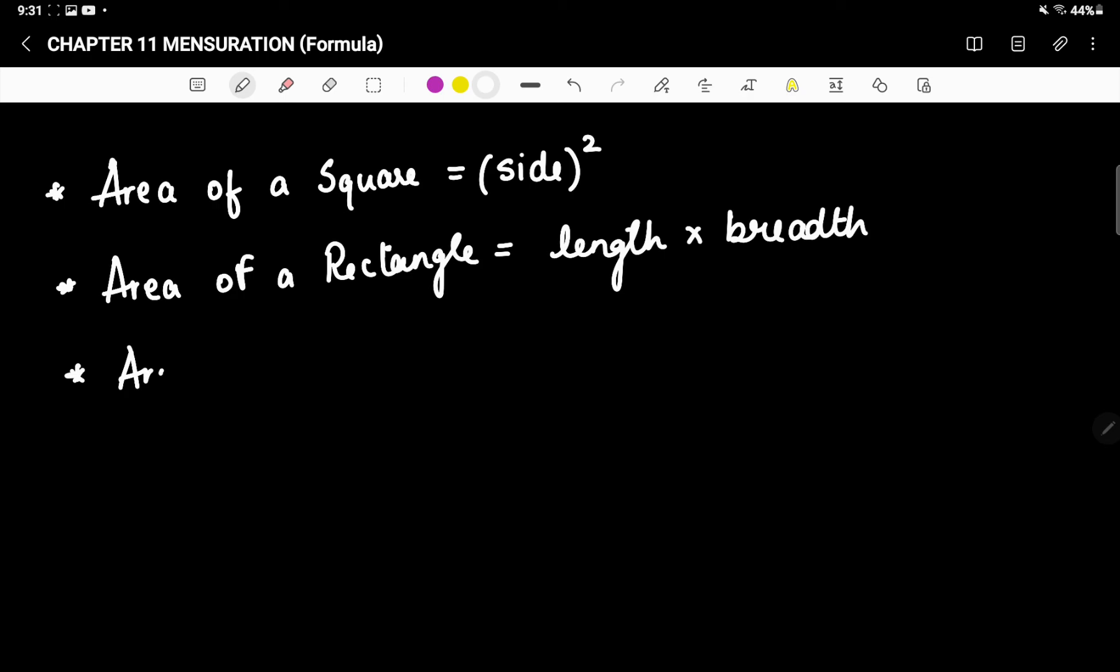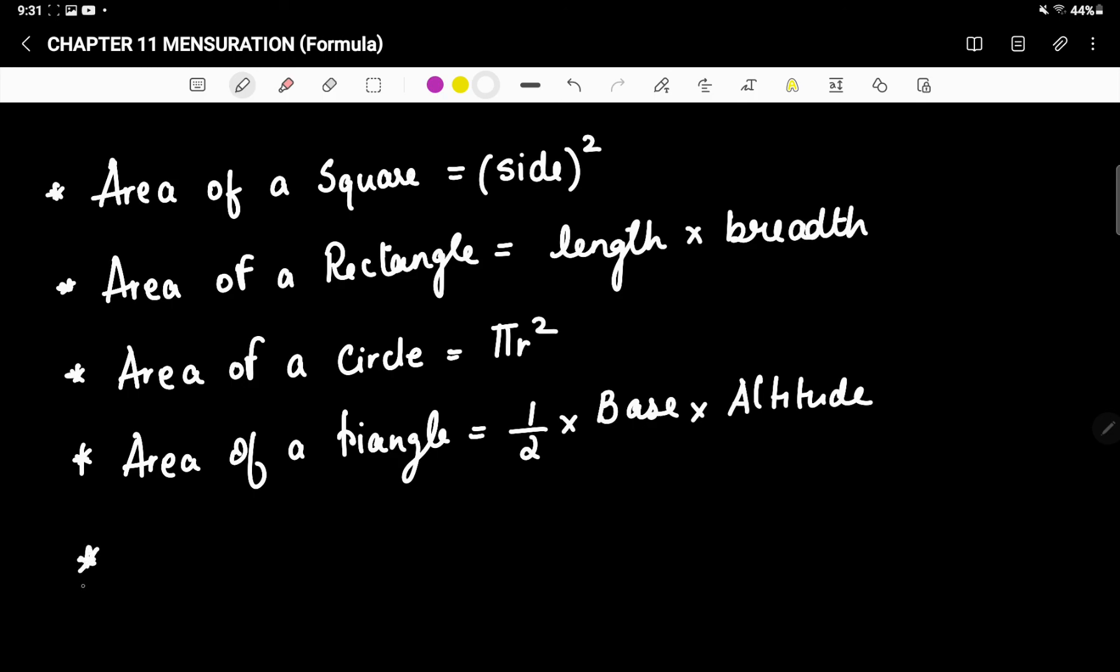Then we have area of a circle, that is πr². Area of a triangle we have written, that is half into base into altitude. Then we have area of a parallelogram, that is base into height.